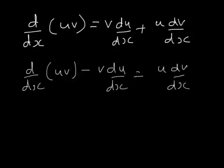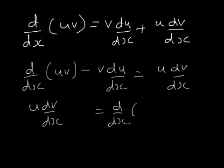I'm just going to write that over here and this over on the right-hand side. So u dv/dx equals d/dx of uv minus v du/dx.